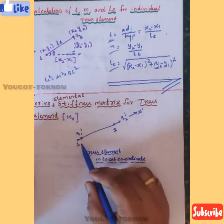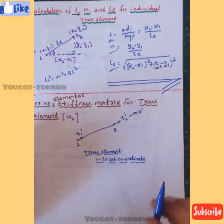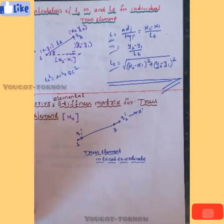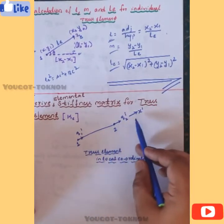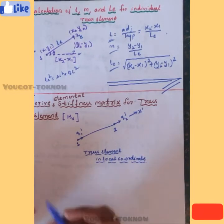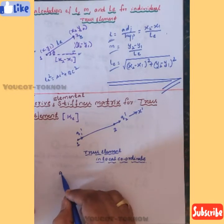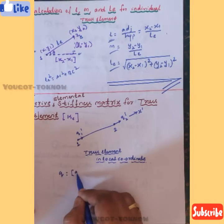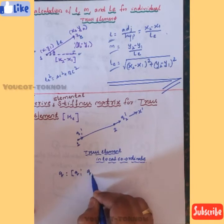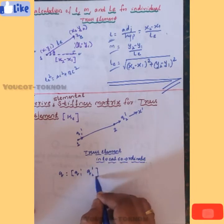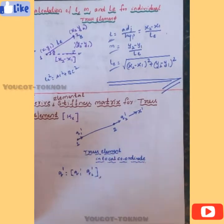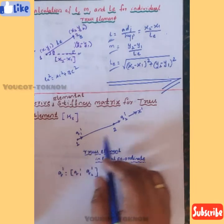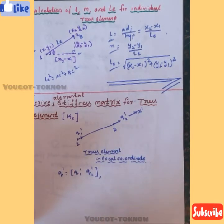Now if you observe here, I have written a simple truss element in local coordinate. Each node, if you observe, has one displacement in the local coordinate system. That means I can write q as equal to {q1_dash, q2_dash}. It looks like a simple bar element in local coordinate system.